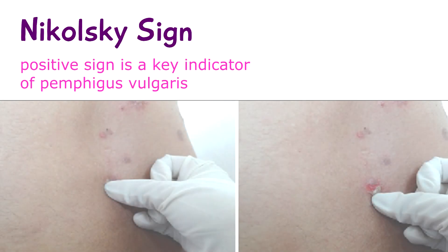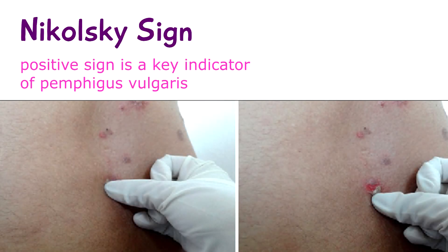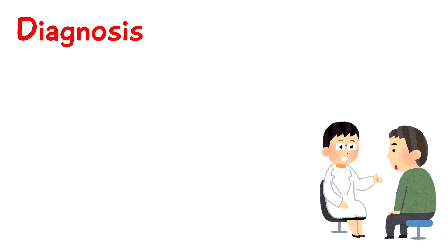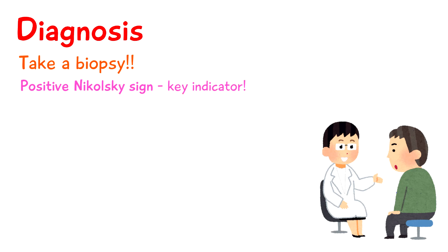If the disease is ongoing for a while, a patient may present with a positive Nikolsky sign. A positive Nikolsky sign means the top layer of the skin can slip away from the lower layer when it's rubbed, and this leaves a moist base. This positive Nikolsky sign is a key indicator for pemphigus vulgaris.